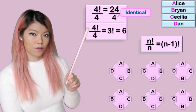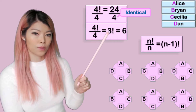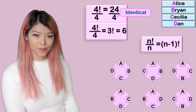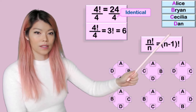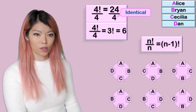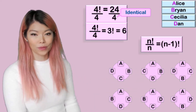And we know n factorial over n simplifies to be (n − 1) factorial. So four factorial over four simplifies to be three factorial. This is the formula for objects in a circle: (n − 1) factorial.